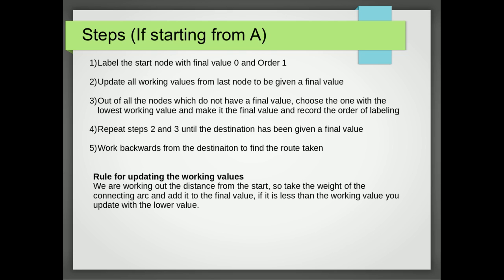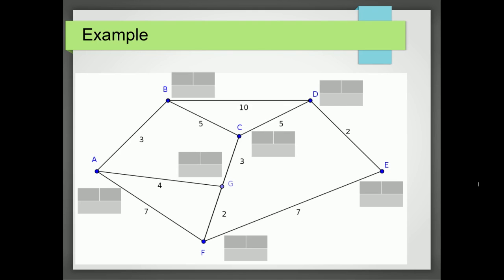This is important. We only update the working value if it's less than the previous working value. Okay, so here's an example for you to try. Or for us to try. So we want to work out how to get from A to E. So the first thing we're going to do is we're going to give A the order 1 and a final distance of 0.